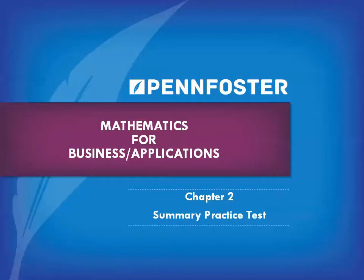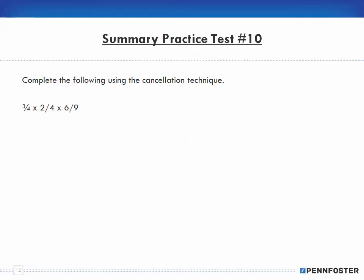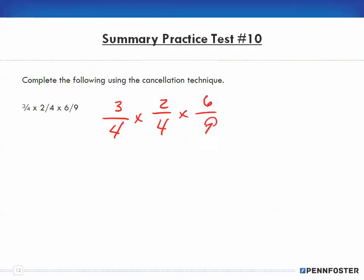Number 10 says: complete the following using the cancellation technique. This technique is highly important — you need to always be trying to reduce to the lowest terms as much as possible. So understand it and use it every chance you get. We have three-quarters times two-fourths times six-ninths.